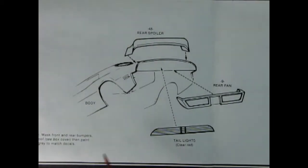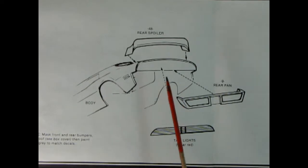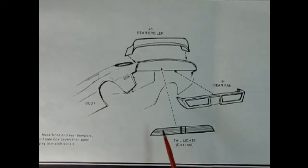Now panel 11 shows all the body panels and things going on the back of our car. So here we have a rear spoiler and a rear pan. And then you'd add in your red tail lights in the back. It says mask front and rear bumpers and roof. See box art cover. Then paint dark gray to match the decals.